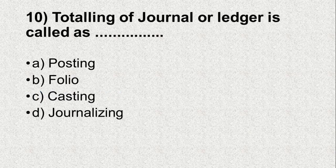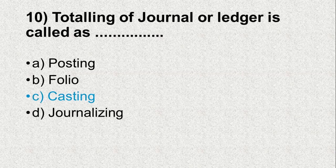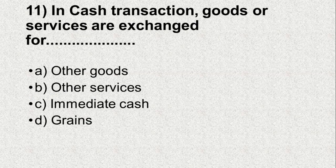Question number 10. Totalling of journal or ledger is called as — Option A: Posting, B: Folio, C: Casting, D: Journalizing. And the answer is C, Casting.